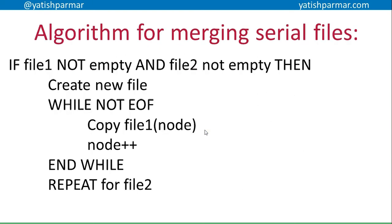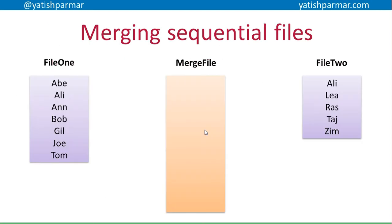The algorithm for merging serial files is basically: if file one is not empty and file two is not empty, then you can go ahead and proceed with copying the data items. I create my new file, copy the items in file one — iterating from element to element in that data file — and then repeat that same process for file two, appending it to the new data file. Job done.